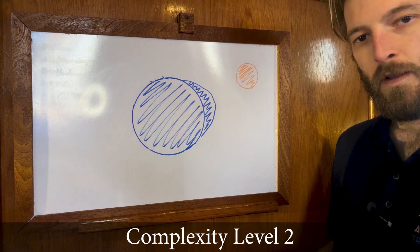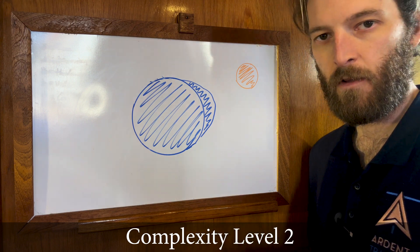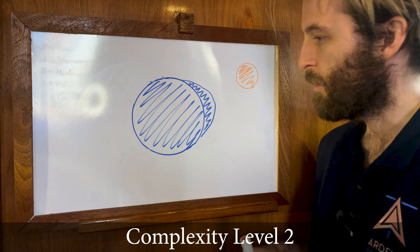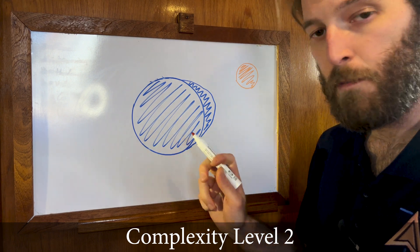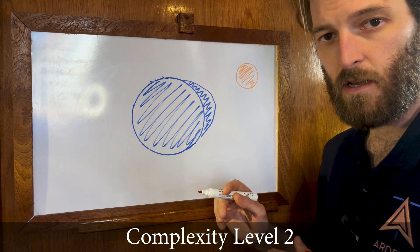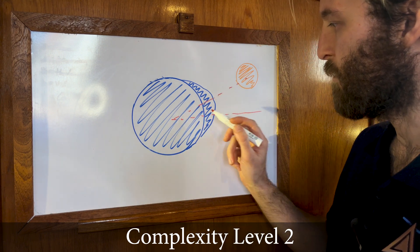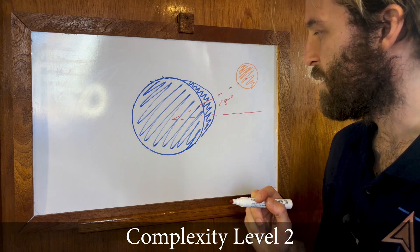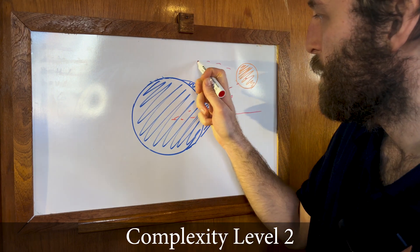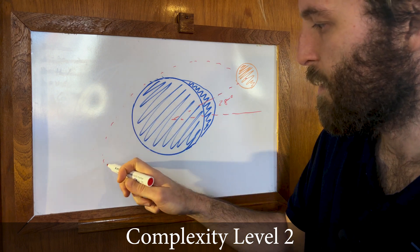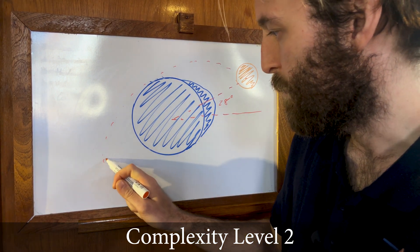So complexity level one: the moon's gravity pulling the ocean towards itself, creating a bulge which is high tide. Now complexity level two, we're going to start thinking about the moon's real position. The last diagram it was just off the equator, but in reality the moon's declination varies between 28 degrees north of the equator and 28 degrees south of the equator. So as this moon circles, orbits around the Earth, so here it is down here now.